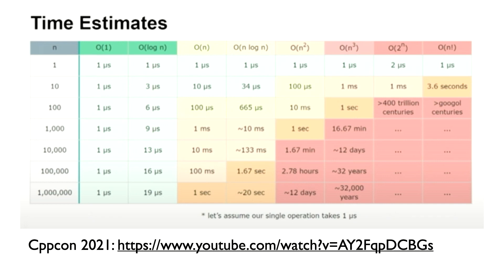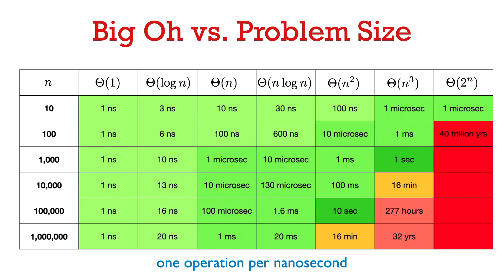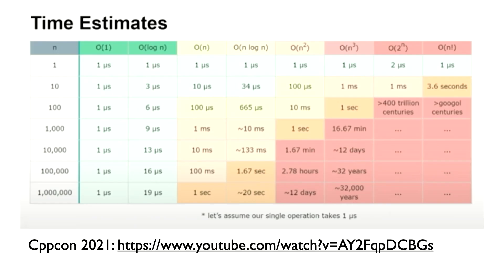That's much closer to what we had on this slide, so the theta of n squared and a million entry of the table gives us 16 minutes. So it's still off by a factor of 10, but it's closer than 12 days.